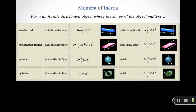For situations where the shape of a uniformly distributed object matters, we look up the moment of inertia from a table. There is a table in the textbook as well. We need to pay attention to two things: having the right object shape and the right axis of rotation.